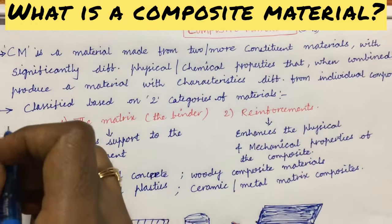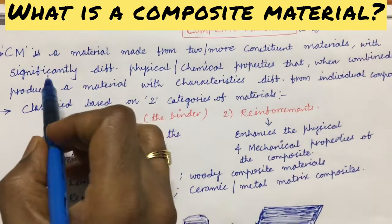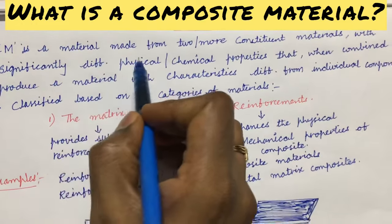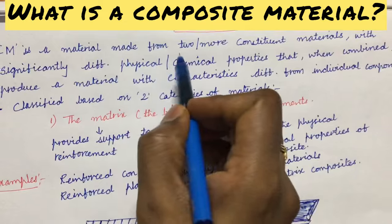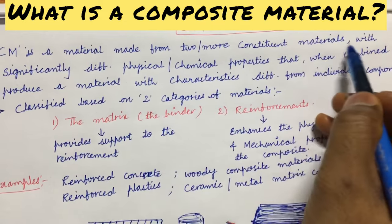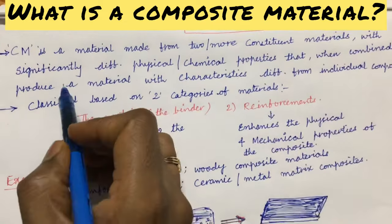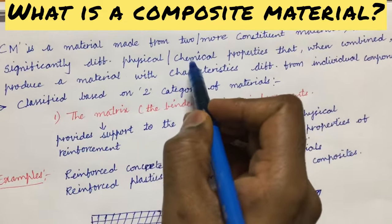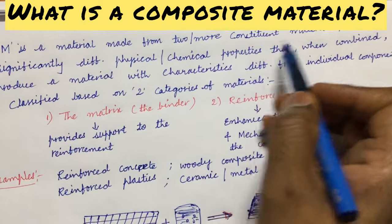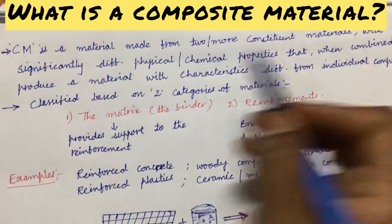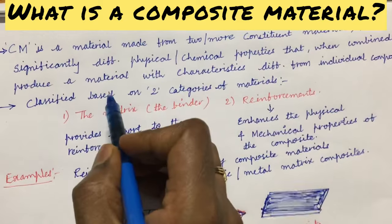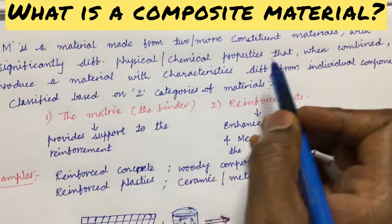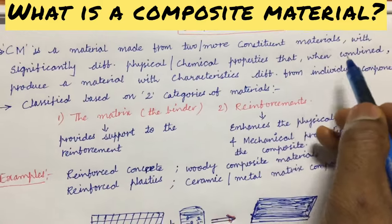Definition of a composite material. A composite material is a material made from two or more combined materials with significantly different physical or chemical properties that, when combined, produce a material with characteristics different from the individual components.